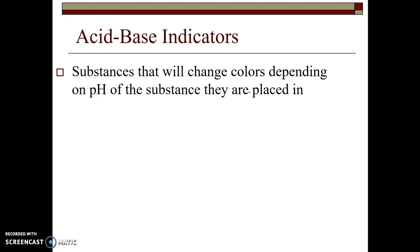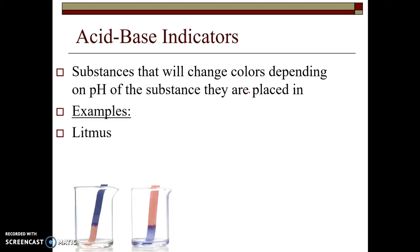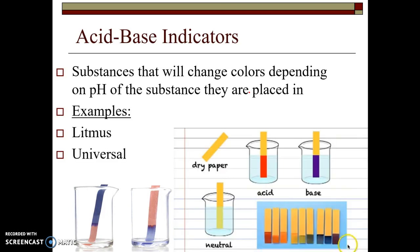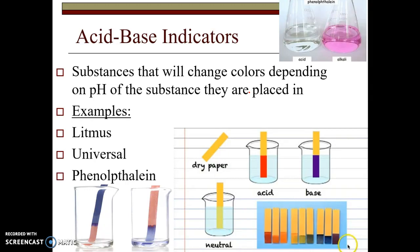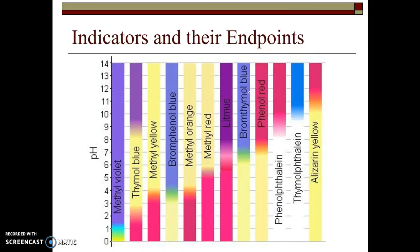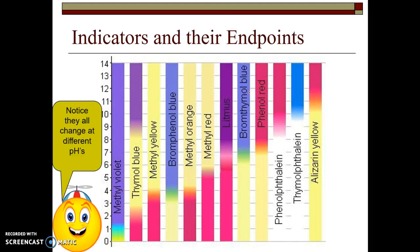There are many other acid-base indicators besides just the universal. The most famous is litmus, being either pink or blue that you've played with, the universal that we just looked at, which can not only tell you whether it's an acid or a base, but can give you some idea if it is a strong acid or if it's a weak acid. Another popular one that we use is phenolphthalein, giving that nice fuchsia color sometimes, and there's many, many other indicators that are out there.